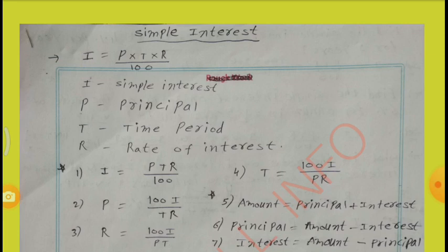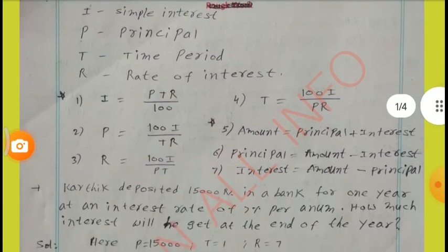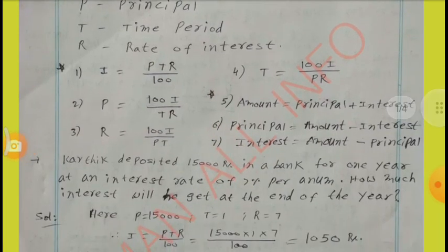Topic: Simple Interest. Formula: I equal to PTR by 100. Here, I represents Simple Interest, P represents Principal Value, T equals Time Period, R equals Rate of Interest. From this formula, we can derive two more formulas: P equal to 100 into I by TR, and R equal to 100 into I by PT.